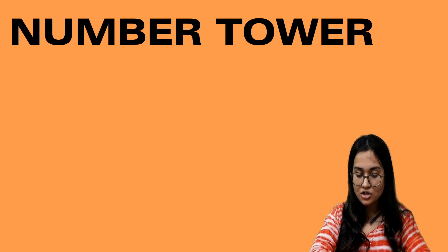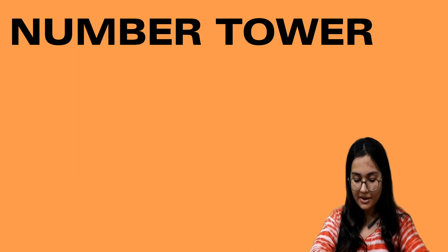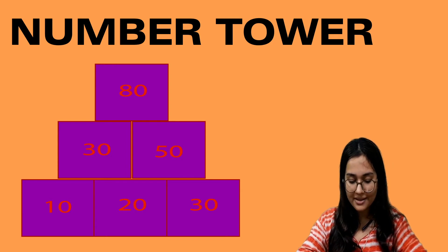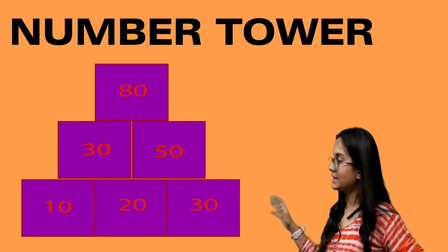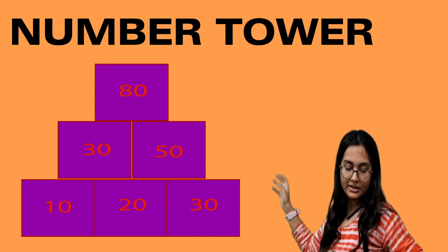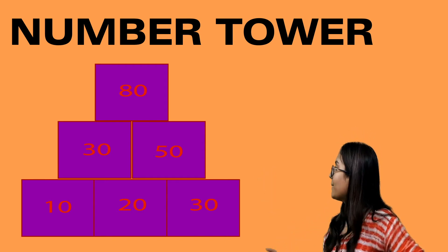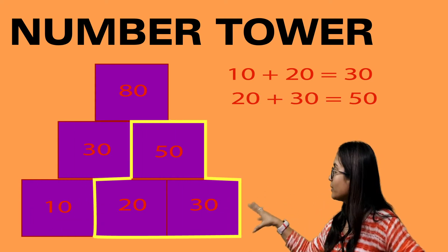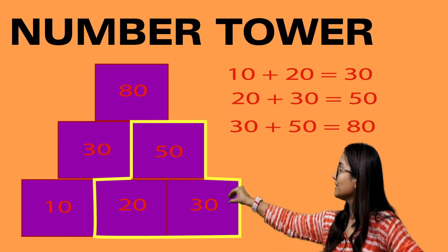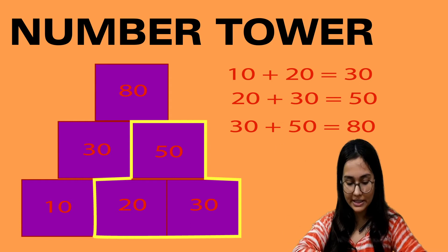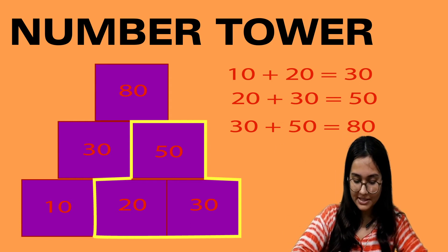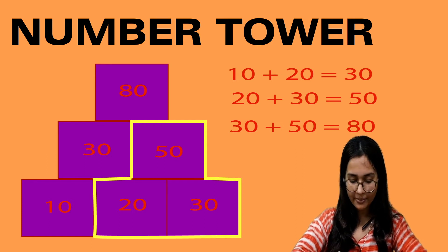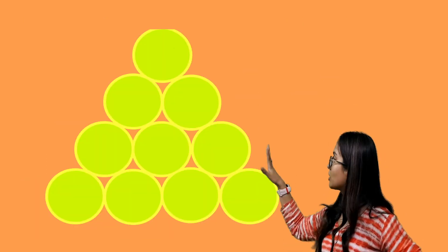Then we have number towers, where numbers can be arranged as a tower. Starting from the bottom, we get a number pattern: 10, 20, 30 at the base; then 30, 50; then 80 at the top. The pattern is that 20 and 10 are added to make 30, 30 and 20 make 50, and 50 and 30 make 80. We add the two numbers below to get the number in the box above them.